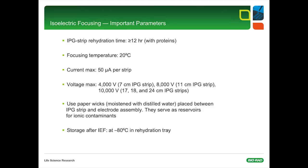Here is a summary of the most important parameters in IEF with IPG strips. IPG strip rehydration time is about 12 hours with proteins, 6 to 8 hours without proteins. Focusing temperature worldwide is always 20 degrees Celsius. The maximum current per strip is 50 microamps. Maximum voltage is strip length dependent. For example, 4,000 volts for 7 centimeter strips, 8,000 volts for 11 centimeter strips, and 10,000 volts for 17, 18, and 24 cm long IPG strips. Very important is the usage of paper wicks, moistened with distilled water, placed between the IPG strip and the electrode assembly. The paper wicks serve as a reservoir for ionic contaminants during isoelectric focusing. After the run, you can use your IPG strips right away or they can be stored at minus 80 degrees Celsius in the rehydration tray.